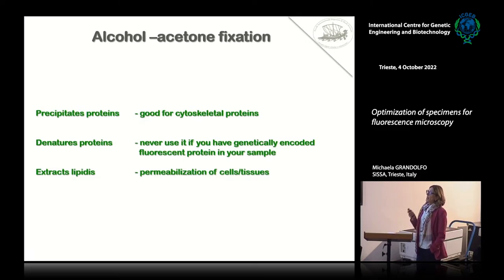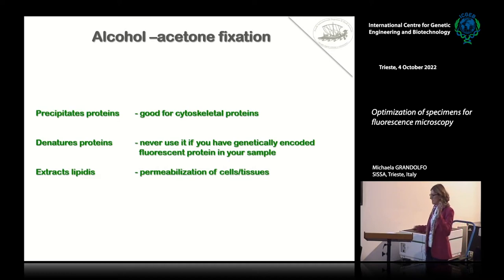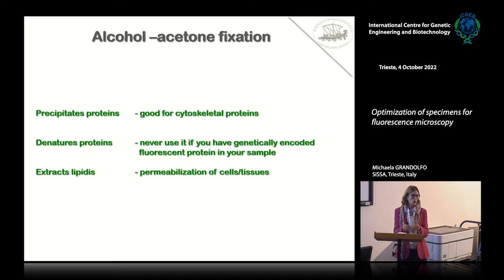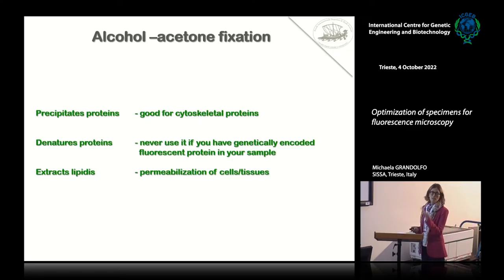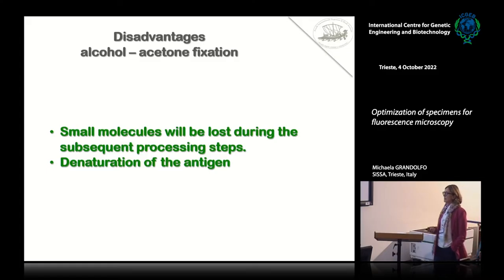Let's move to alcohol/acetone fixation. This type of fixation is able to precipitate proteins, so it is good for cytoskeletal proteins. But remember that it denatures proteins, so never use this type of fixation if you have fluorescent proteins in your sample — eGFP, mCherry, tdTomato — even if it is suggested for the antigen-antibody reaction you want to obtain. Also, it extracts lipids, so you have fixation and permeabilization at the same time — you don't need an extra permeabilization step. Disadvantages: small molecules will be lost during subsequent processing steps, and you can have denaturation of the antigen.